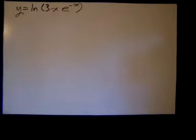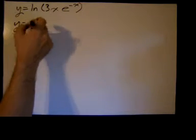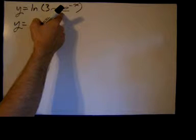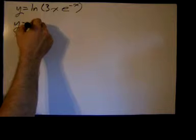We're going to use properties of logarithms to break this up before we take the derivative. So we get y, we have a product of 3 times x, times e to the negative x, so I'm going to break that up into a sum of logarithms.